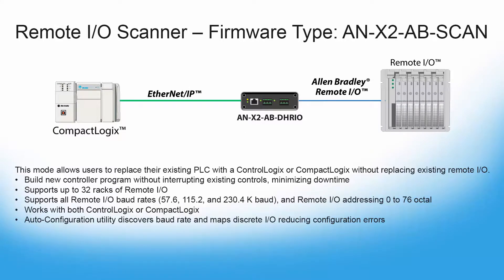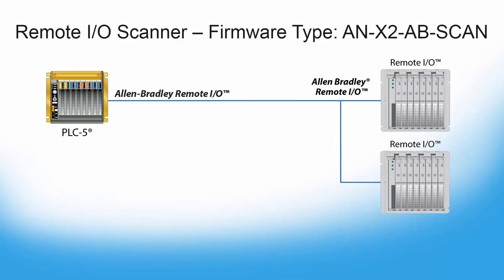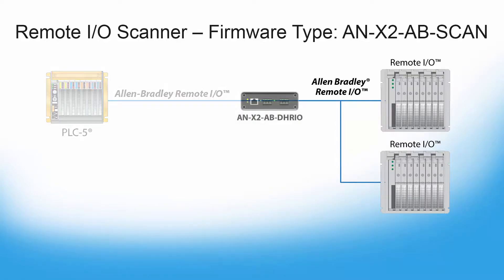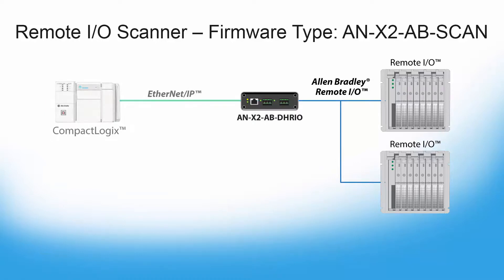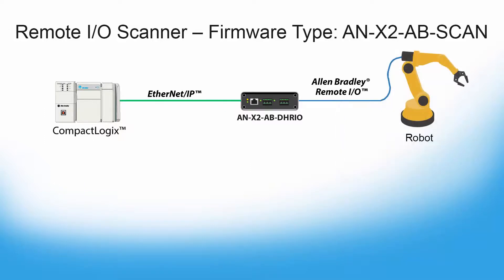Next up we have the ANX2AB Scan, or Remote IO Scanner. This mode allows users to replace their old RIO based PLC with the ControlLogix or CompactLogix without having to replace their existing remote IO. It can also be used for situations where you want to use a new Ethernet IP PLC to control a RIO based robot. In that way, it's sort of the mirror opposite of the ABDRV04 firmware mode.